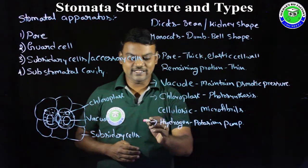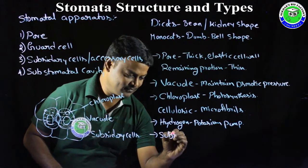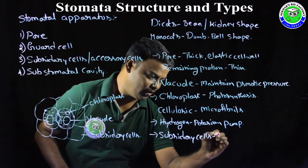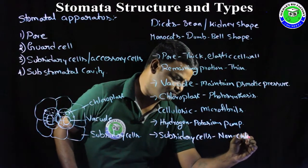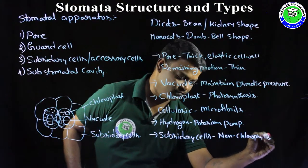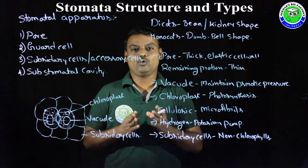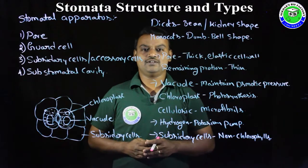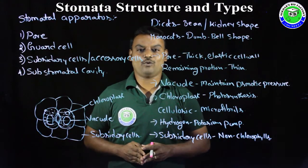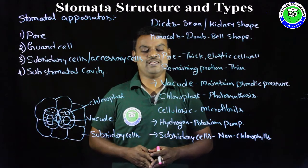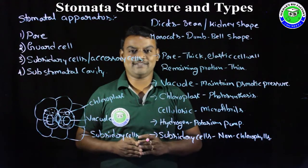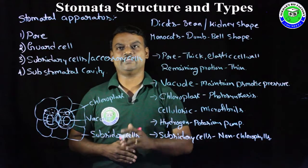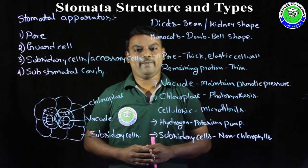Subsidiary cells are non-chlorophyllous in nature due to the absence of chloroplasts. Just below the pore there is a cavity called the sub-stomatal cavity, which helps in the exchange of gases during opening and closing of stomata. These are the structures associated with the stomatal apparatus.